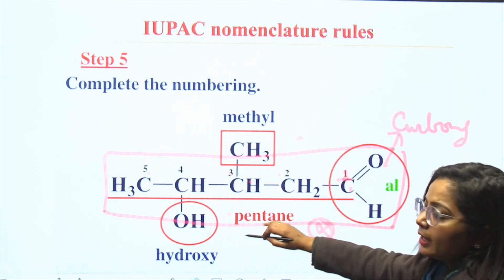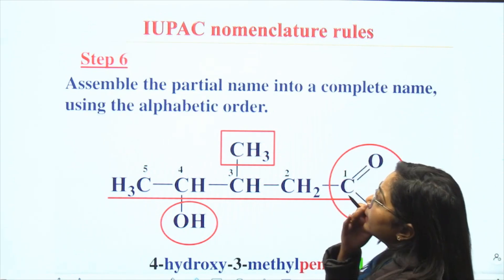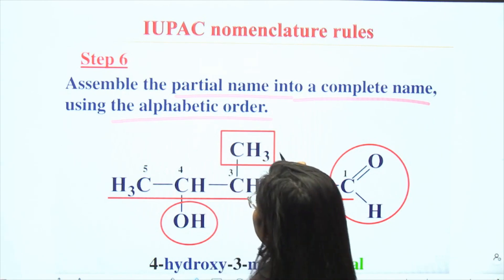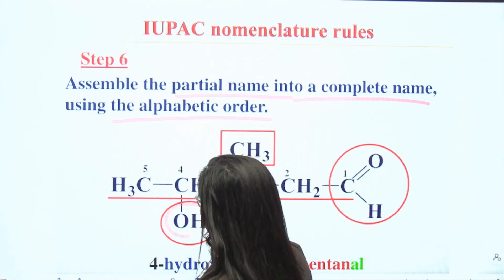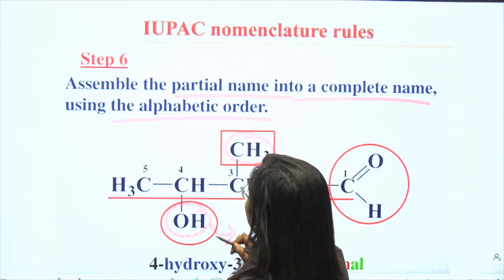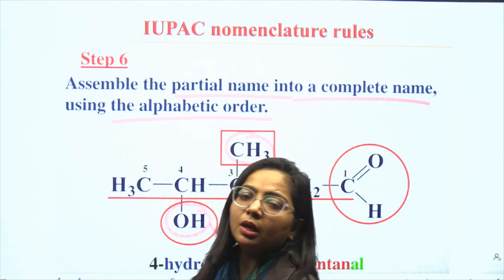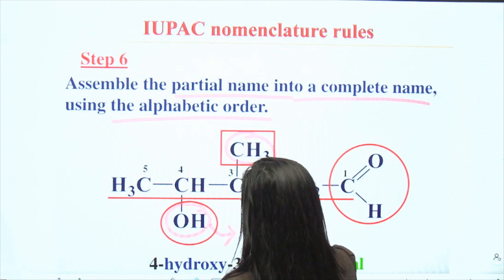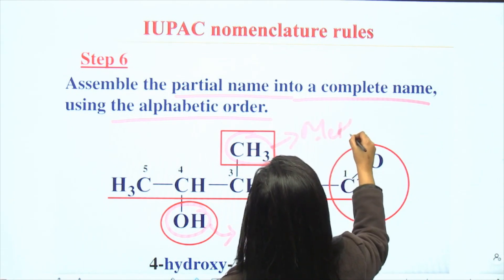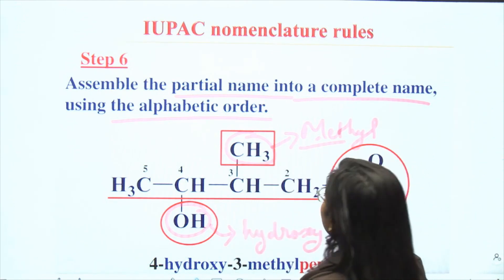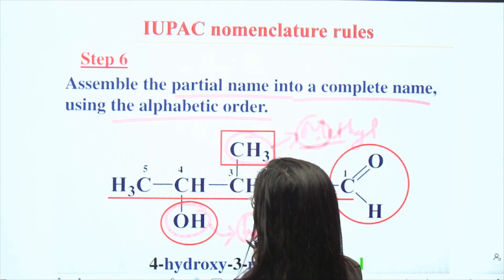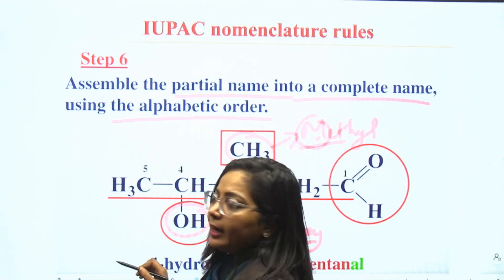Both the methyl and the hydroxy are substituents. The next step is to assemble the partial name into a complete name using alphabetical order. We have two substituents: OH (prefix: hydroxy) and methyl. We must give priority according to alphabetical order. Comparing 'H' and 'M', alphabetical priority goes to 'H', so we give priority to the hydroxy group over the methyl group.